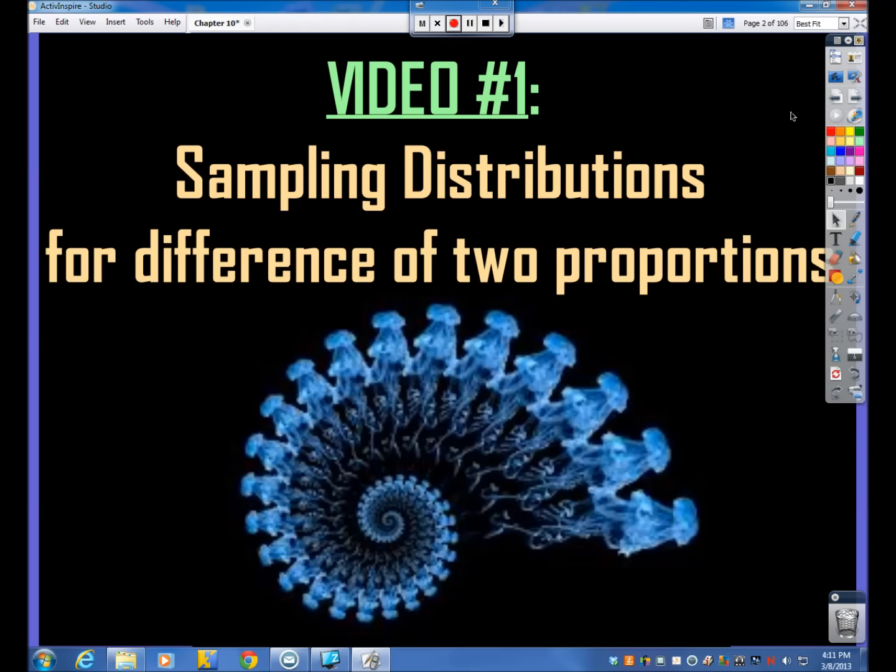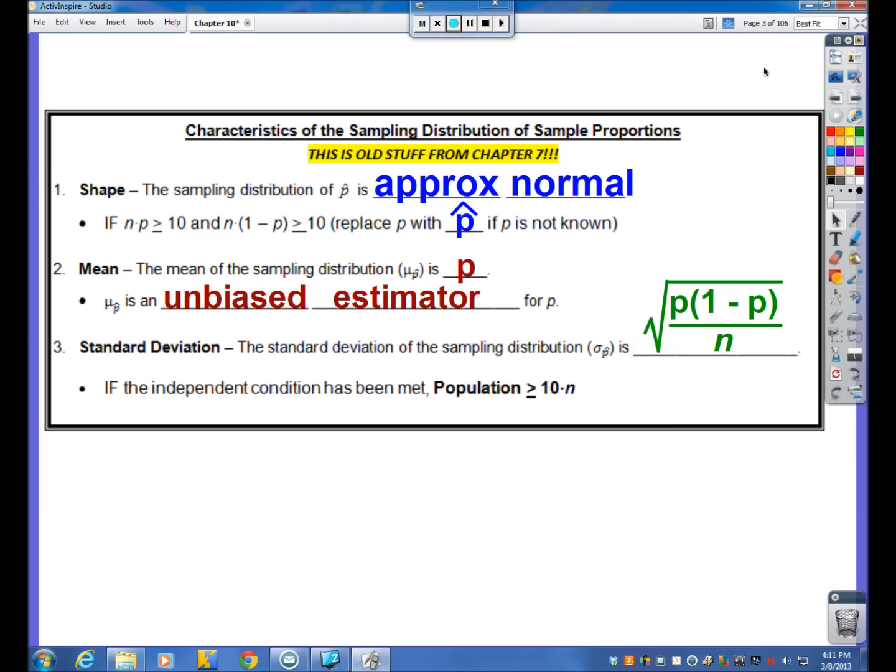So, the first video, we're just going to talk about sampling distributions, which this goes all the way back to three chapters ago, in chapter 7, when we first started this semester, really. We're going to be talking about sampling distributions for the difference of two proportions. The first three videos of this chapter are going to be dealing with proportion problems, and the last four videos will be dealing with mean level problems.